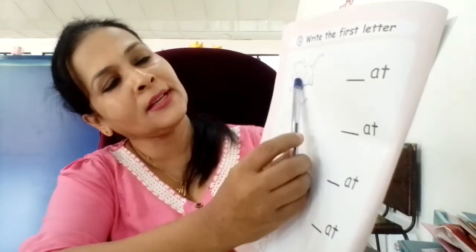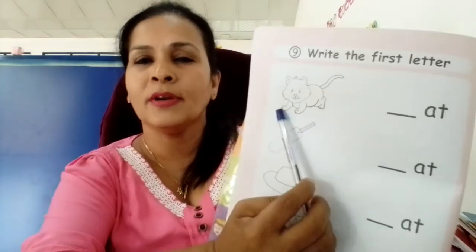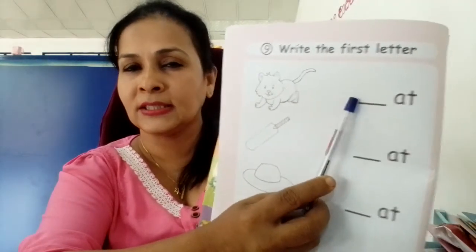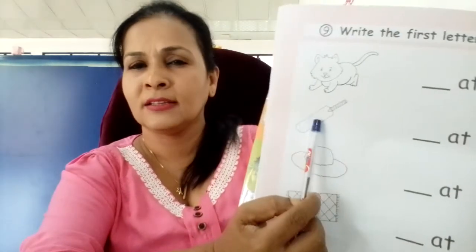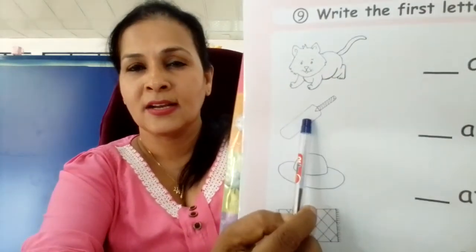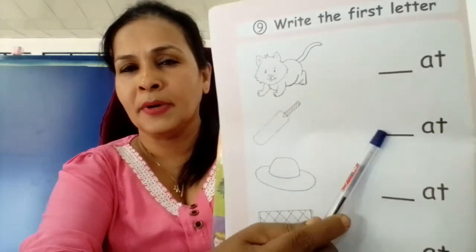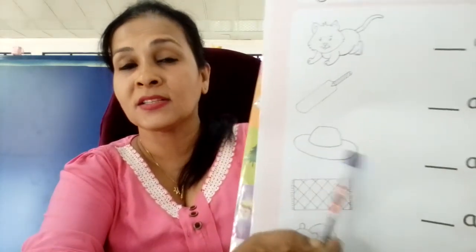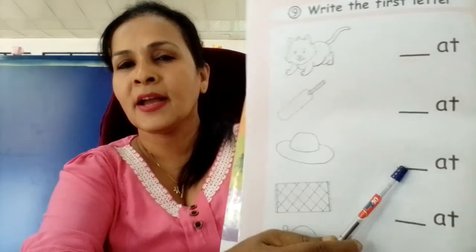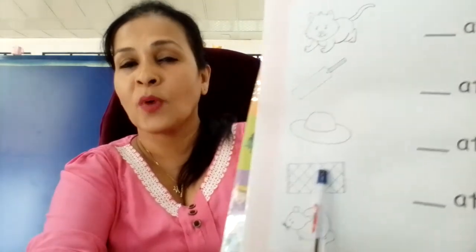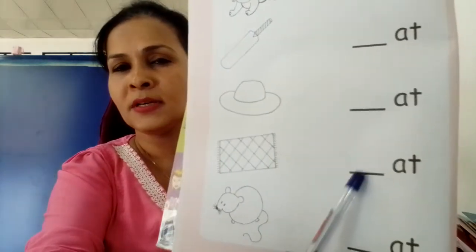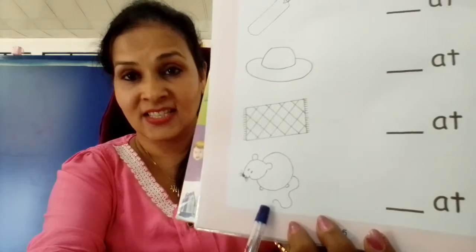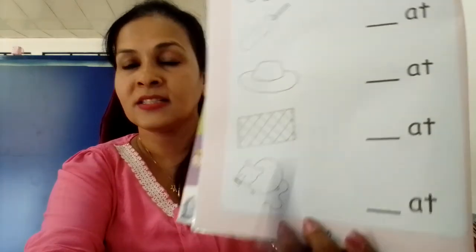Can you complete these words? Now see what letter is missing. Who is this? Cat — C, at, cat. This one? Bat — B, at, bat. What is this one? Hat — H, at, hat. This one is mat — M, at, mat. Who is this? Rat — R, at, rat.